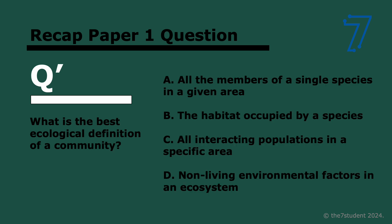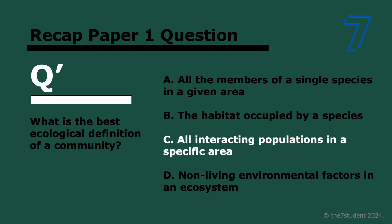Next question: what is the best ecological definition of a community? The answer is C — all the interacting populations in a specific area, so many different species. Whereas a population is the members of the same species living in a given area. Pretty straightforward — a textbook definition.